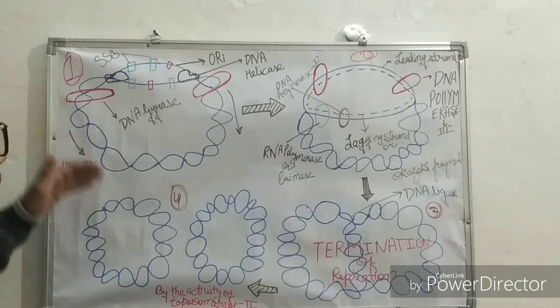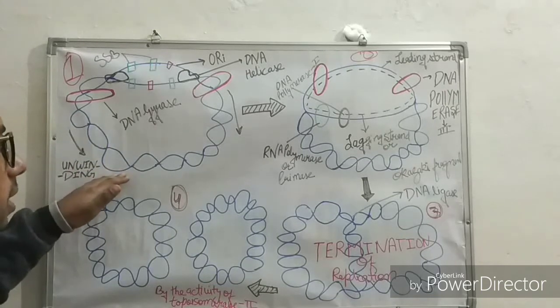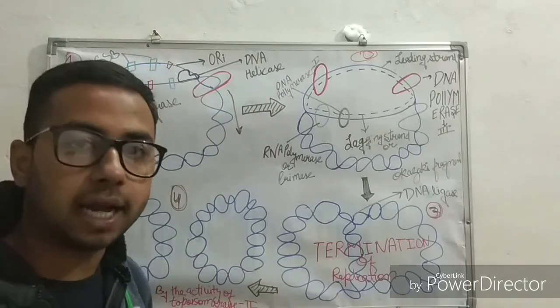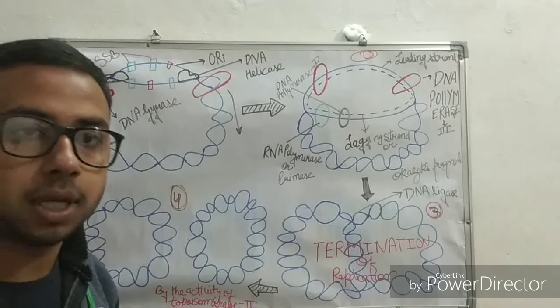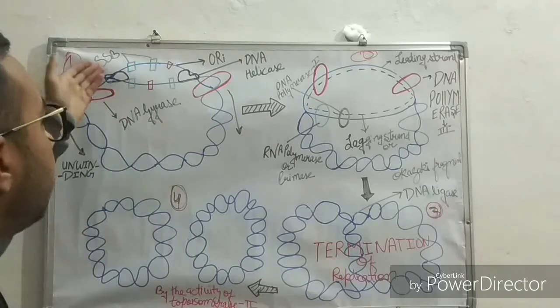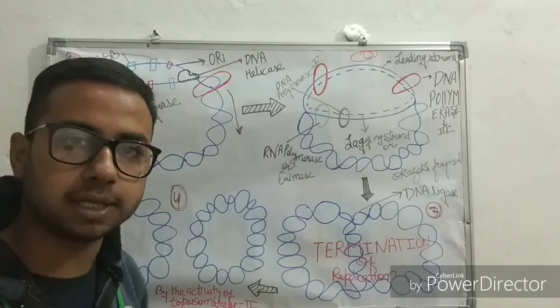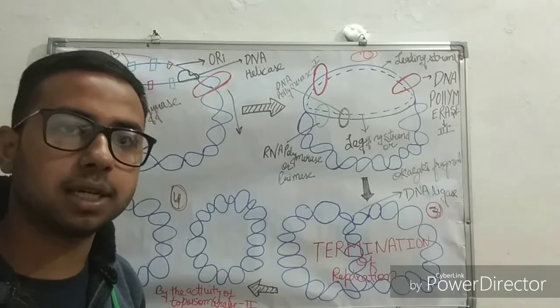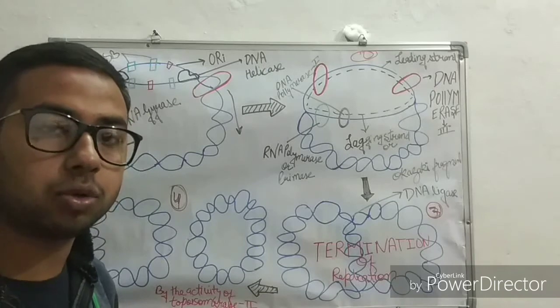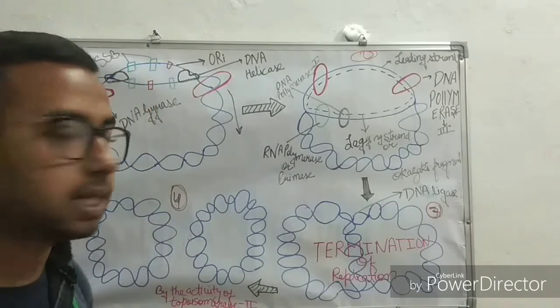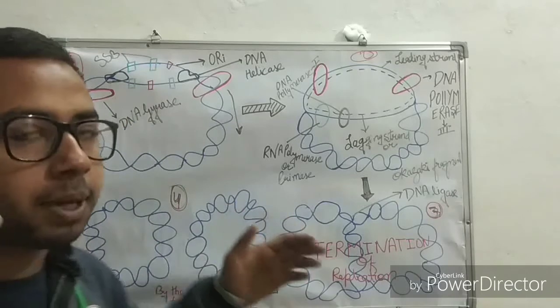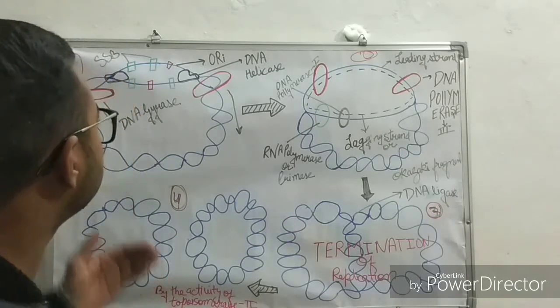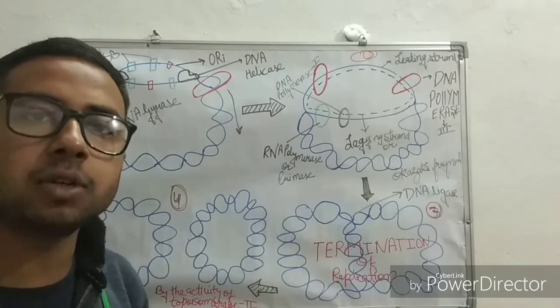DNA helicase breaks the hydrogen bonds between the DNA double strands. After that, SSB single-strand binding proteins come in and play an important role in preventing the hydrogen bonds from reforming between the two strands.